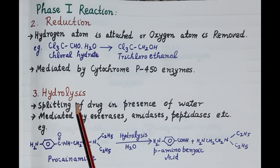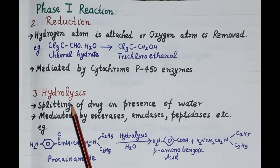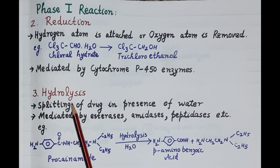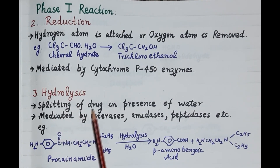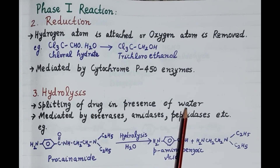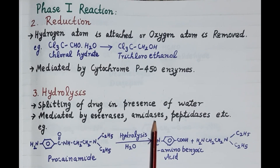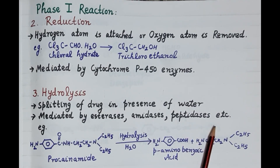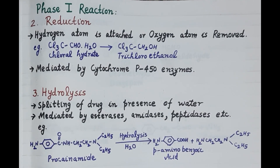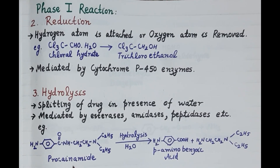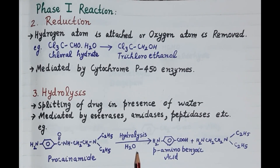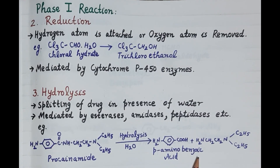The next type of phase 1 reaction is hydrolysis. In hydrolysis, the drug breaks or splits in the presence of water. Hydrolysis is mediated by enzymes like esterases, amidases, peptidases, etc. For example, procainamide splits in the presence of water to produce para-amino benzoic acid, and this para-amino benzoic acid is excreted in the urine.